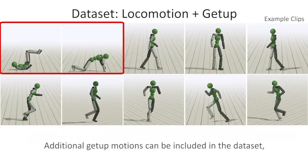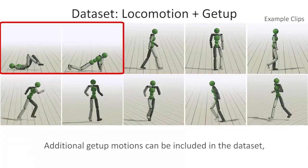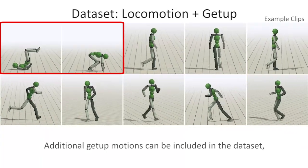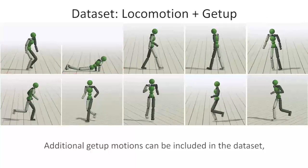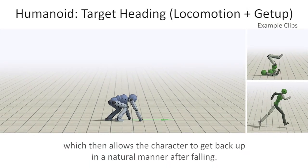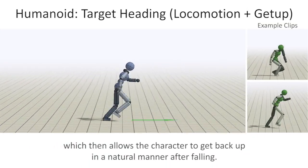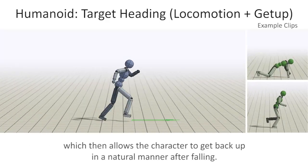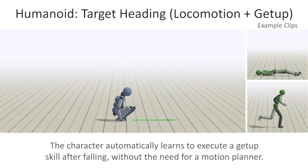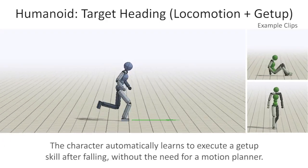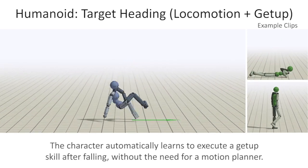Additional getup motions can be included in the dataset, which then allows the character to get back up in a natural manner after falling. The character automatically learns to execute a getup skill after falling, without the need for a motion planner.